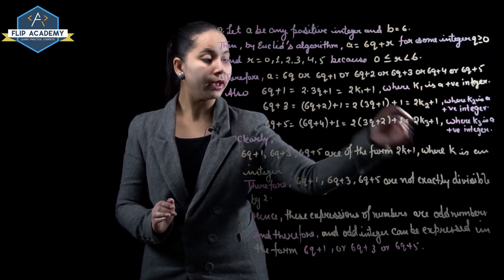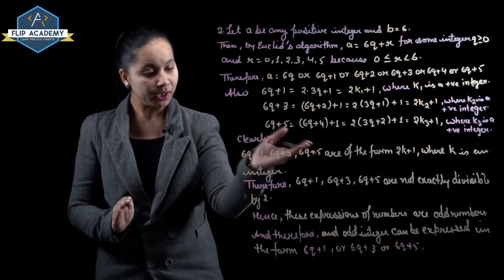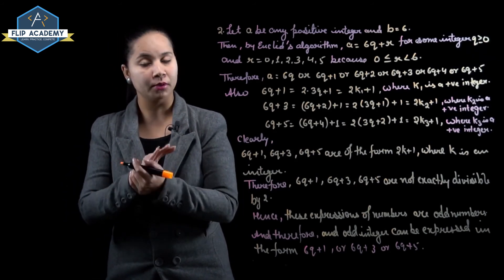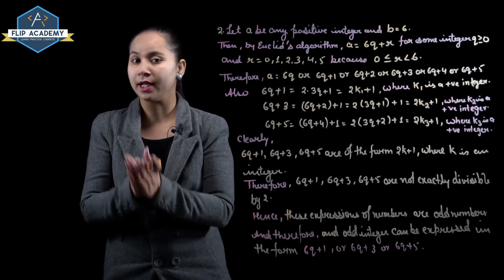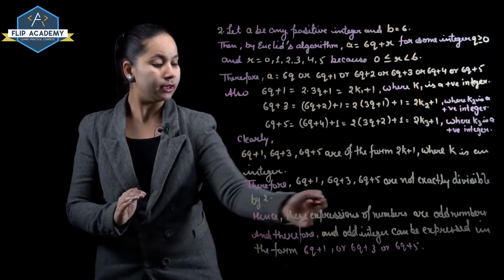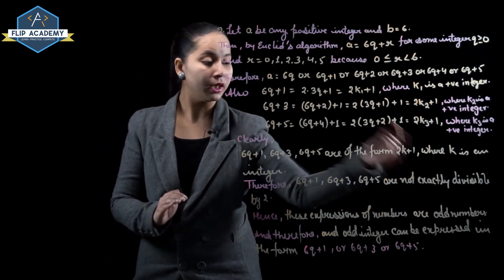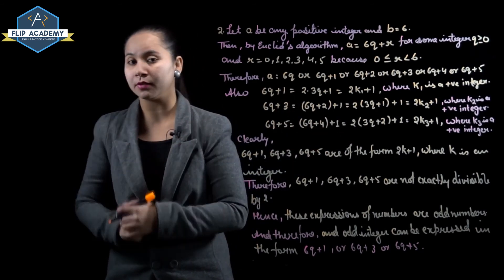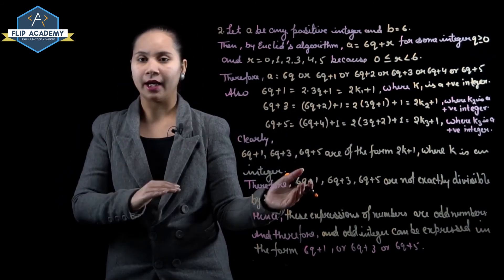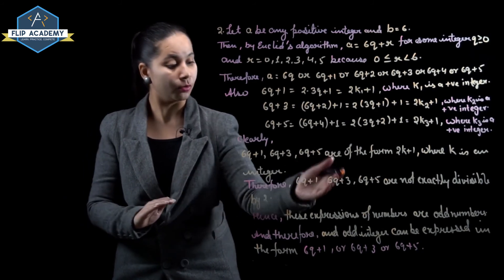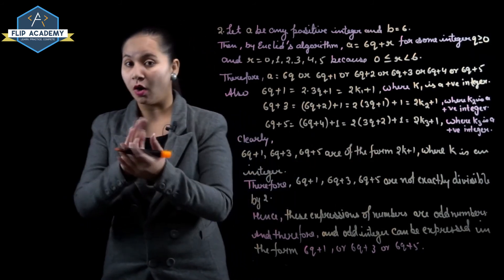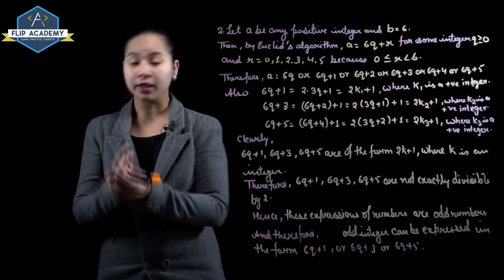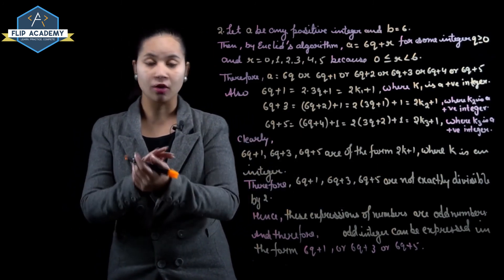Since 6q+1, 6q+3, and 6q+5 are not exactly divisible by 2, these are odd numbers. Any number not divisible by 2 is called an odd number. Hence, these expressions represent odd numbers. Therefore, odd integers can be expressed in the form 6q+1, or 6q+3, or 6q+5. Second question is complete.